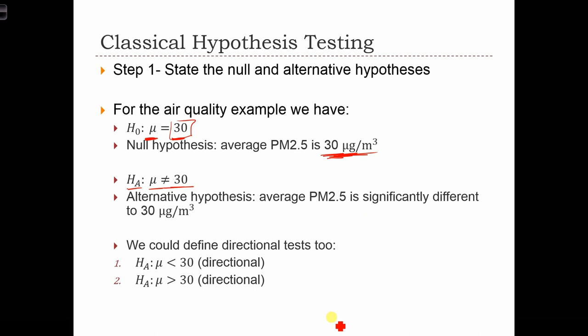If the question had said, and in this case it probably could have said this, can the scientists prove that the air quality has worsened or that PM2.5 has increased from 30, then we would have used this directional hypothesis, that the mean is now greater than 30. But the wording in the question just asked for, is the mean still equal to 30? And therefore, the alternative hypothesis is that it is not equal to 30.